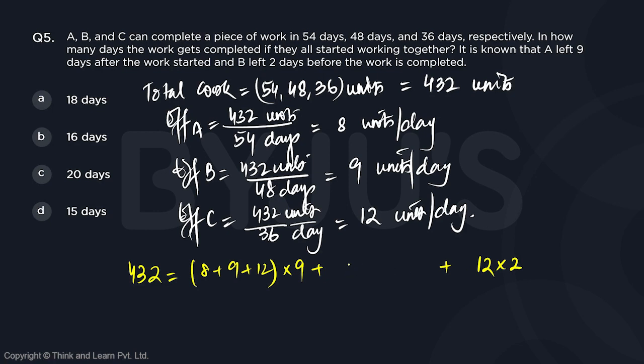So that means B and C, they both were working together for a certain number of days because here only C was working, here B and C were working. For the first 9 days A, B and C, all 3 were working.